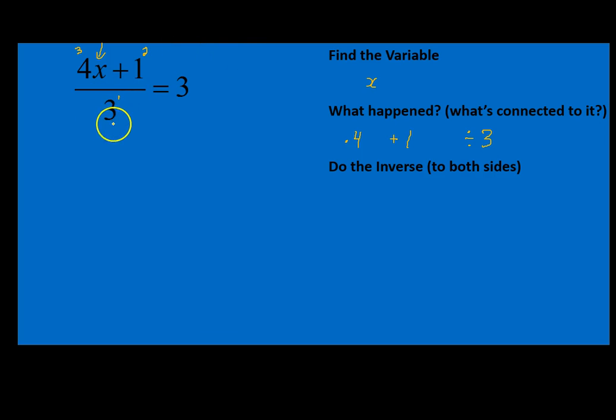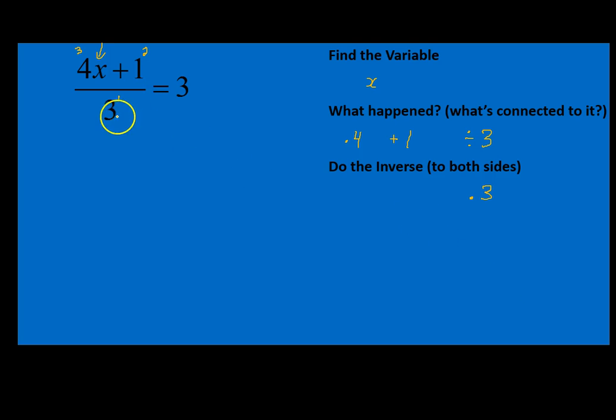To get rid of our fraction right here, we're going to multiply times 3 on both sides of the equation. So we're going to multiply times 3 to both sides of the equation.